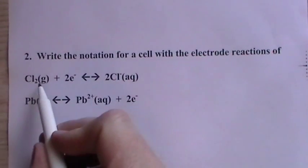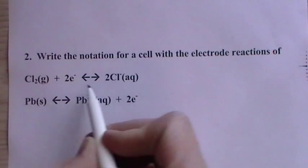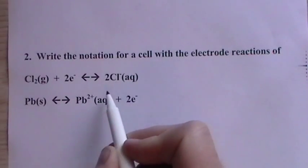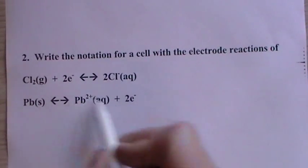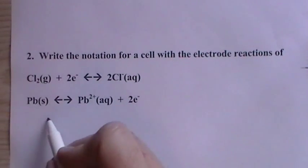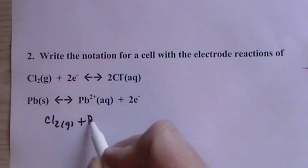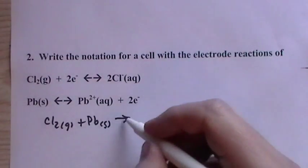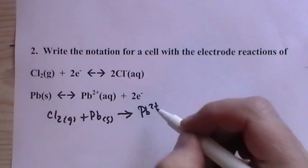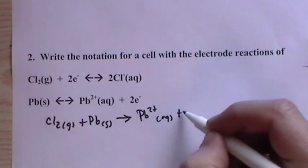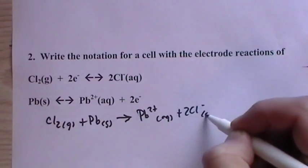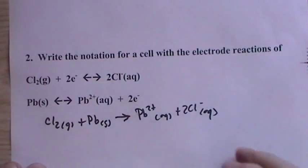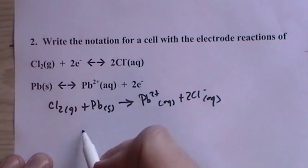Now, for this one, we have a gas. And so that's going to mean something to us in aqueous here. And then we have the lead. Now the number of electrons are matched up, so we don't have to do any further attempt to balance. Then we have lead ion and then two chloride ions.